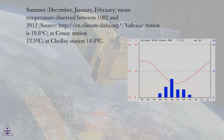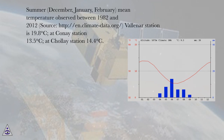The summer mean temperature observed between 1982 and 2012 at Vianna station is 19.8°C, at Cone station 13.5°C, and at Chale station 14.4°C.